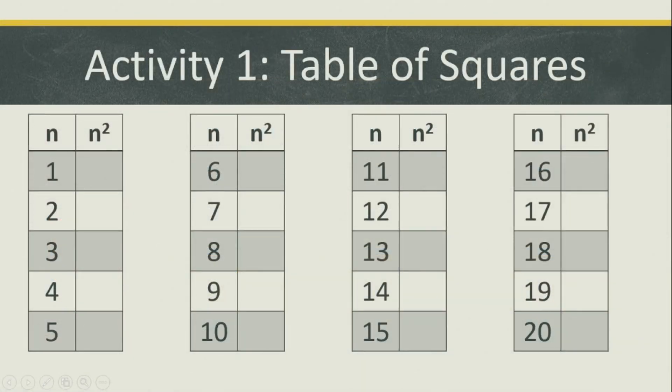Before we proceed with our topic, let's recall first the table of squares. I have your numbers 1 to 20. To get the square of a number, you multiply it by itself.